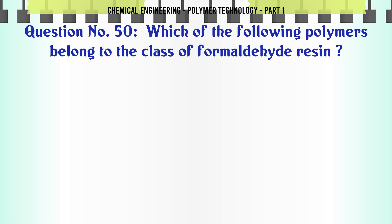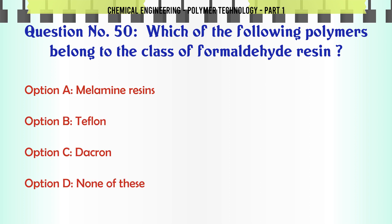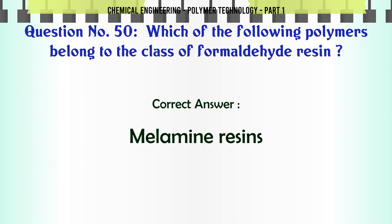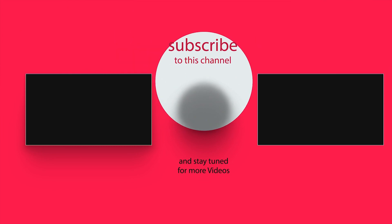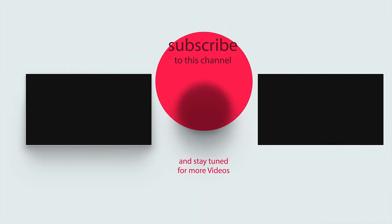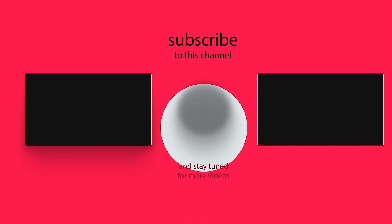Which of the following polymers belongs to the class of formaldehyde resin? A. Melamine resins, B. Teflon, C. Dacron, D. None of these. The correct answer is Melamine resins.